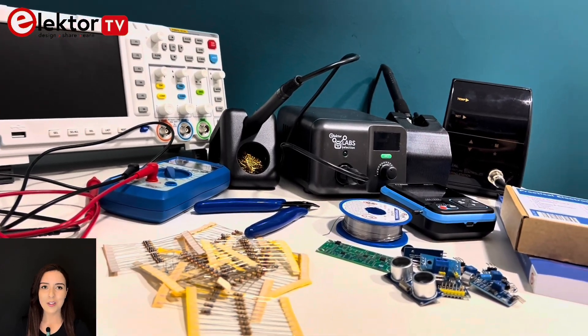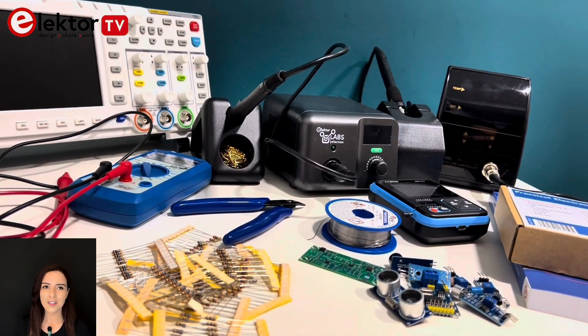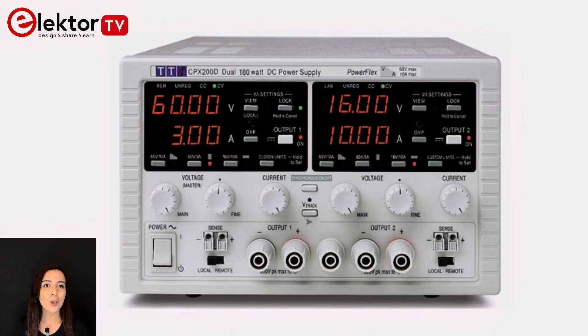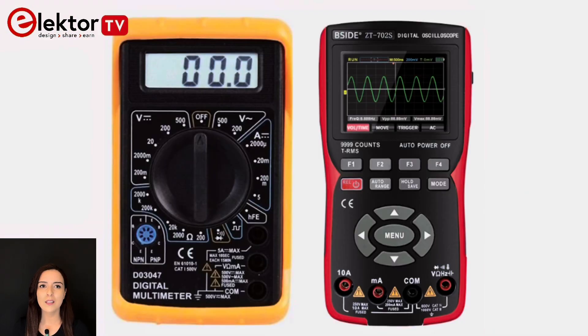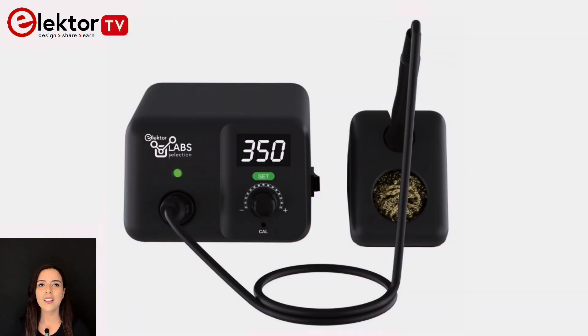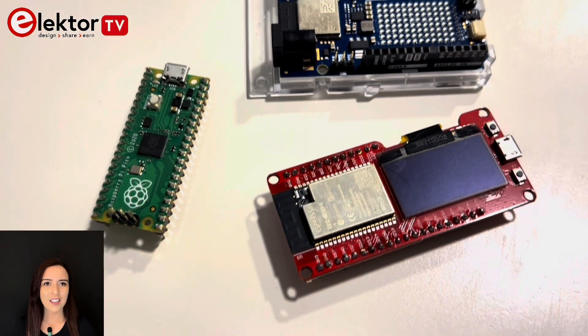Chapter nine, test and measurement, introduces you to the essential tools for analyzing your circuits. You'll learn about power supplies, multimeters, oscilloscopes and function generators. These tools are vital for designing and troubleshooting electronic circuits.